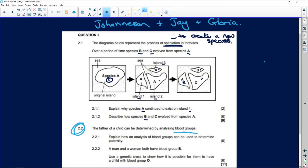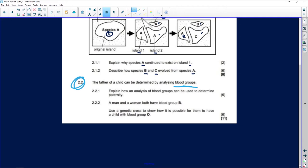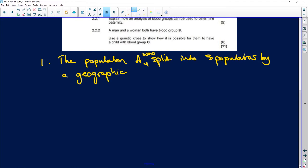When we look at describing species B and C, and how they evolved from A, this is where we now get the basics of every single speciation question that you will get in an exam, and it is as simple as that. Point number one.